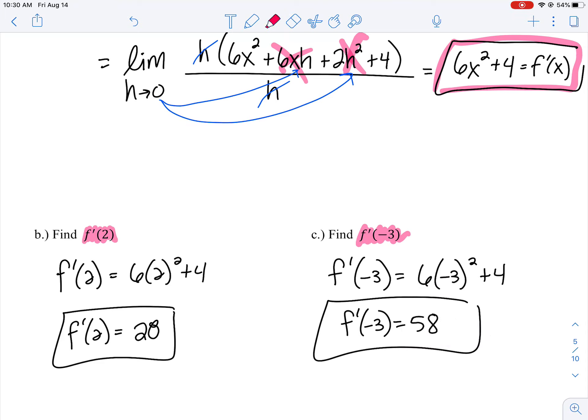The instantaneous rate of change when x = 2 is positive 28. When x = -3, I'm increasing at a rate of 58. I said increasing because it's positive. If it were -58, the change would be decreasing, going down. Make sure you know how to interpret what these values mean.